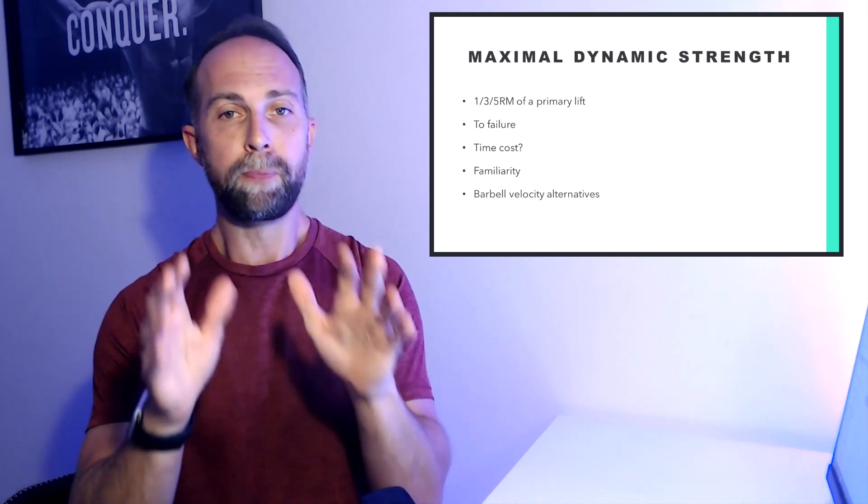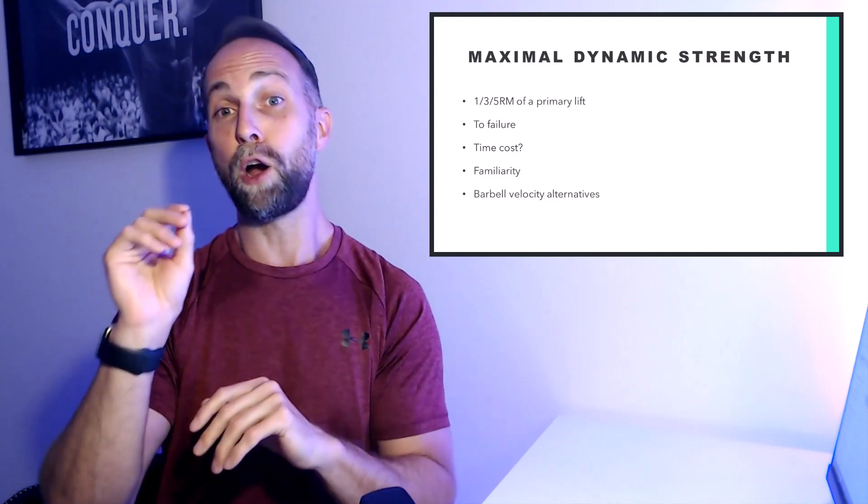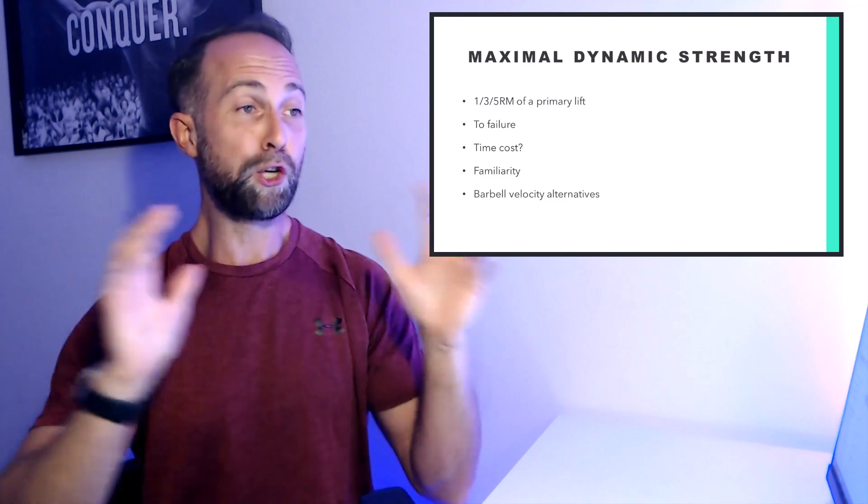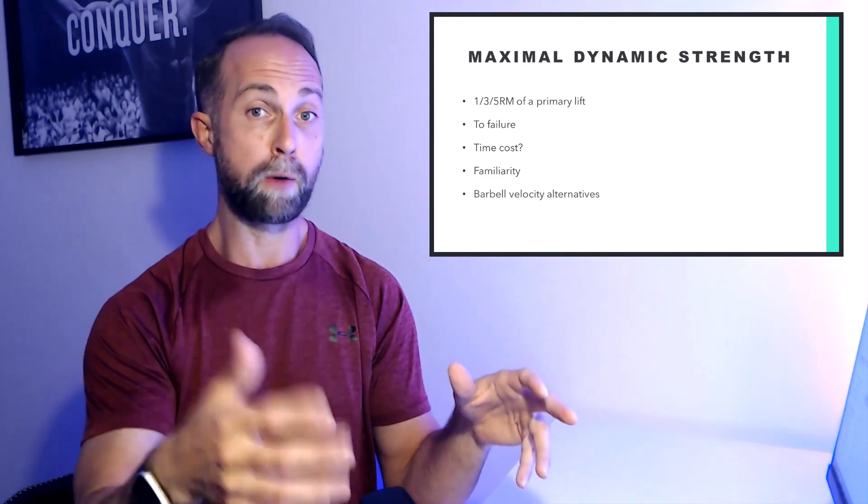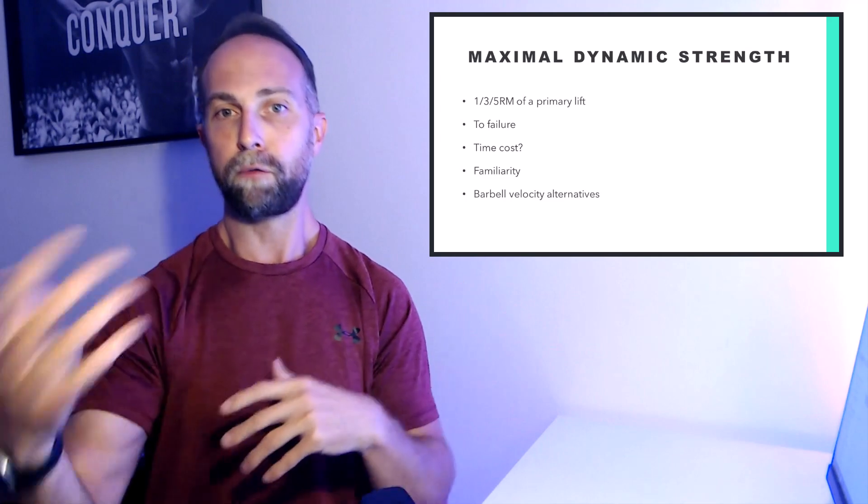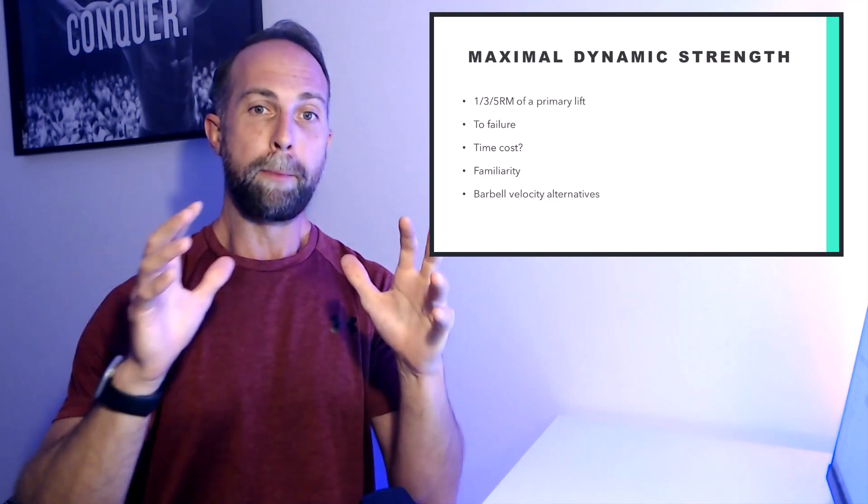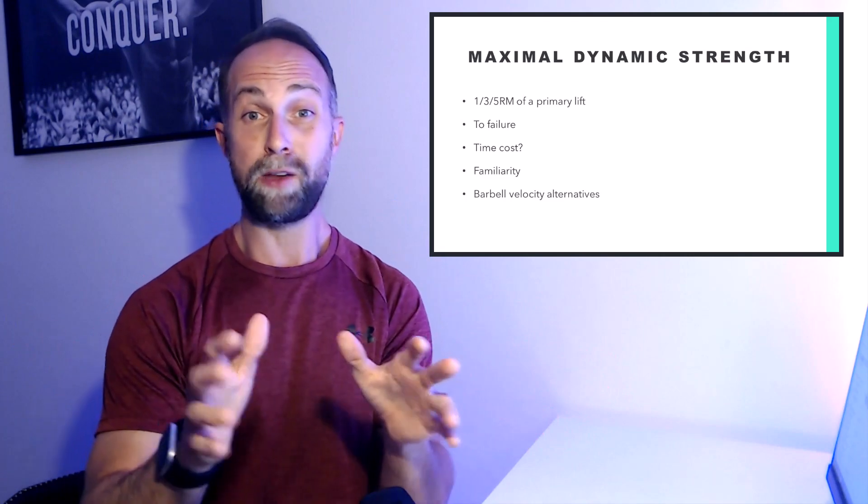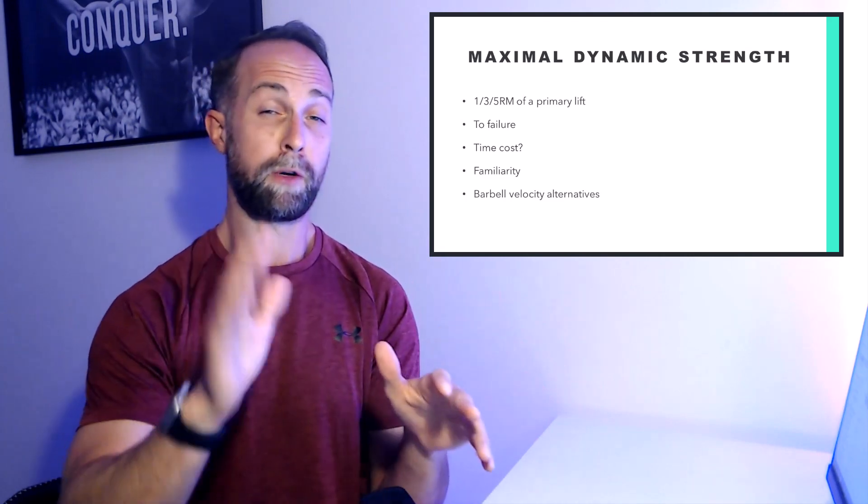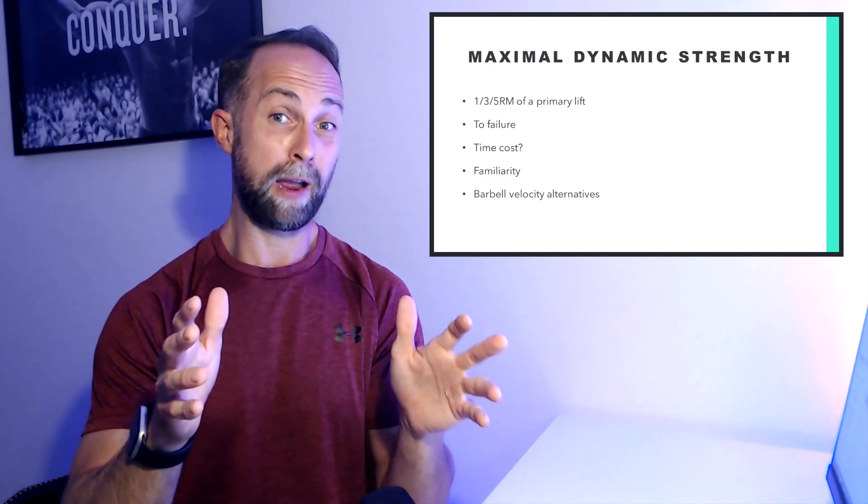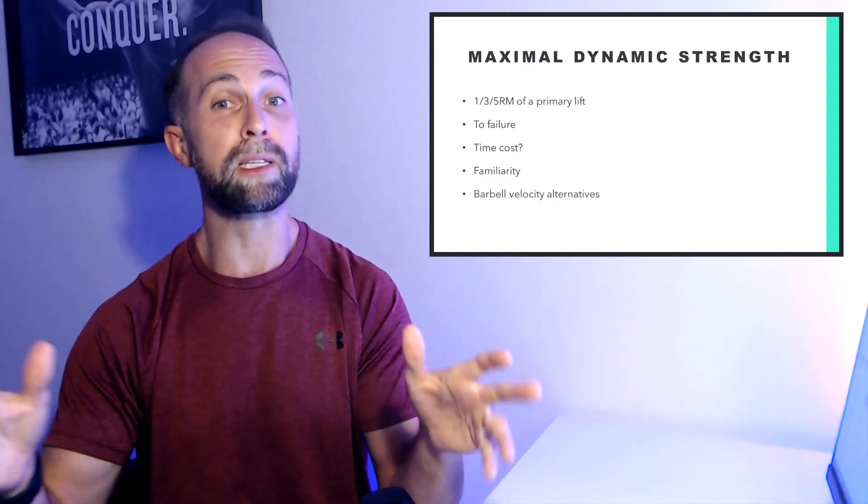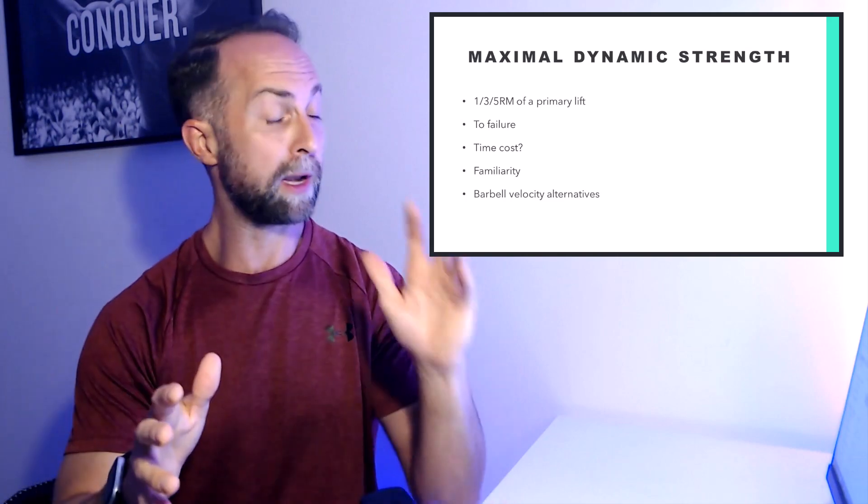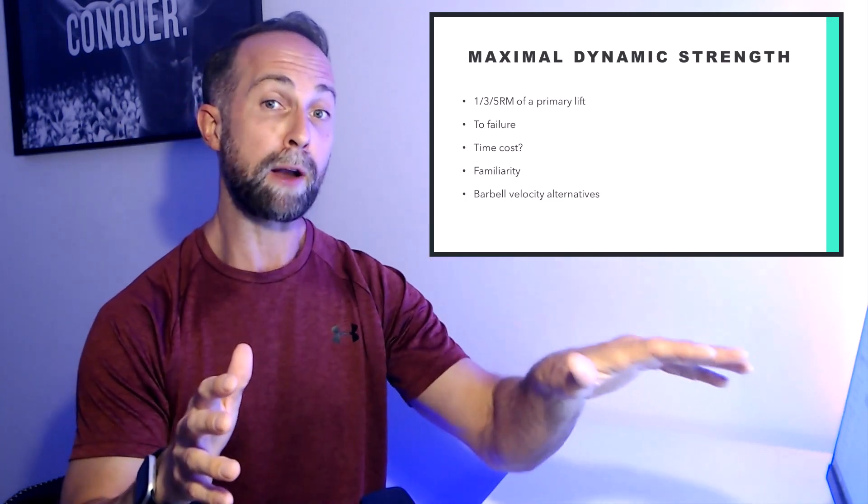Keep in mind the scores and values you get are going to differ between free weight and Smith machine. Generally these tests are based around free weight movements—free weight back squat, bench press, bench pull. But if you're using a Smith machine, keep in mind you could see wildly different results. Expect anywhere from 8% to around 13% increase in your RM score if you use a Smith machine compared to the free weight alternative.